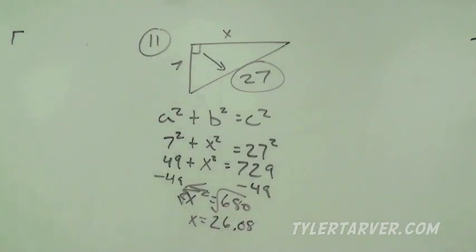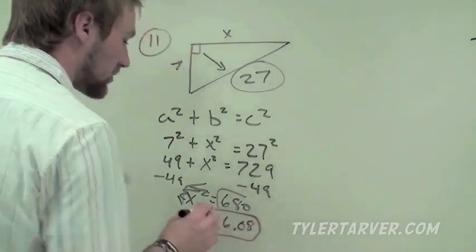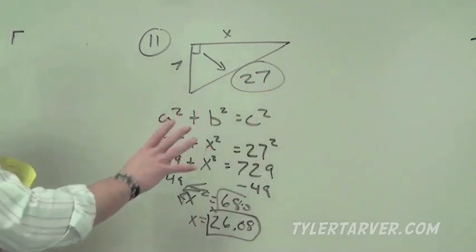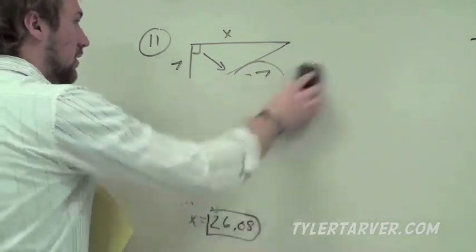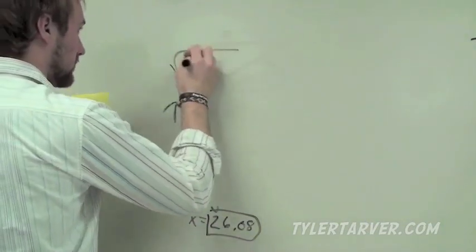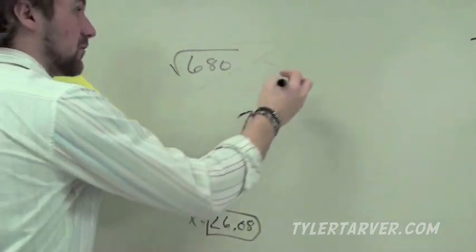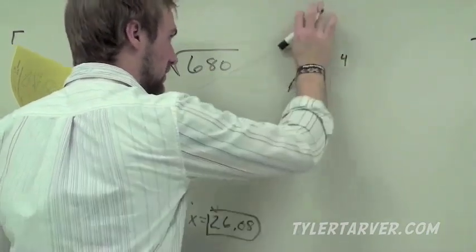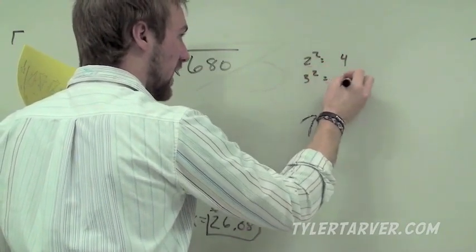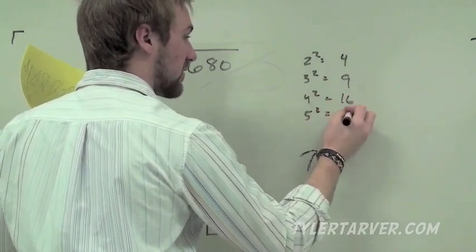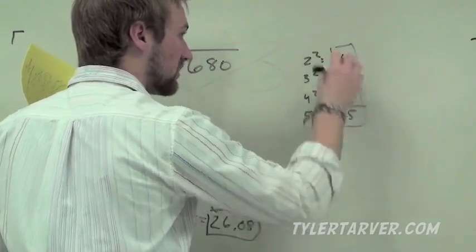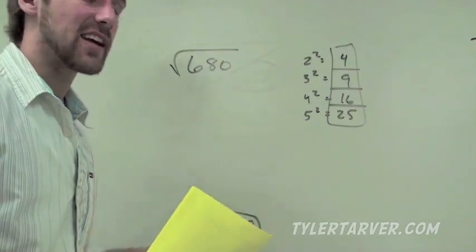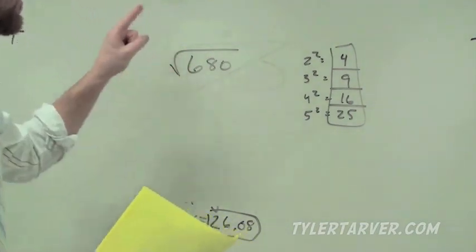Put that decimal answer down and box it in, but also express it in simplest radical form. So we're working with the square root of 680. The numbers we look for are perfect squares: 2 squared is 4, 3 squared is 9, 4 squared is 16, and 5 squared is 25. Write those down — 4, 9, 16, and 25 — because they're very important. We want to see if any of them divide evenly into 680.